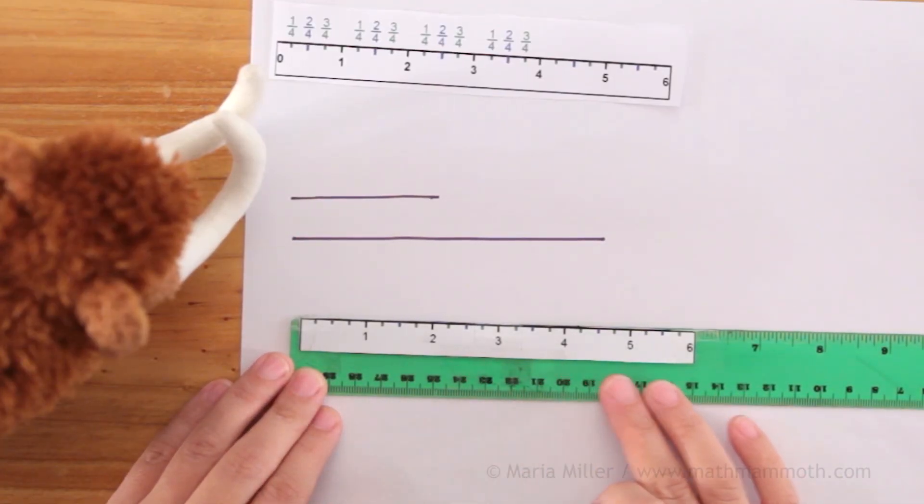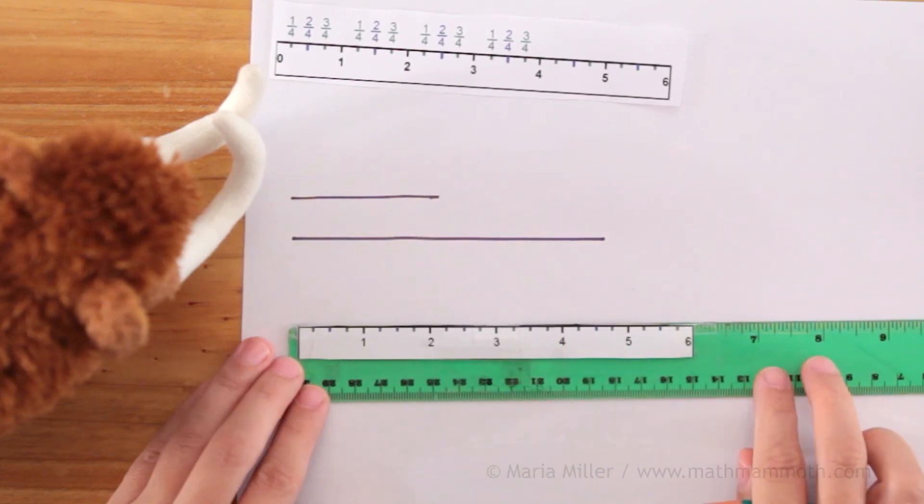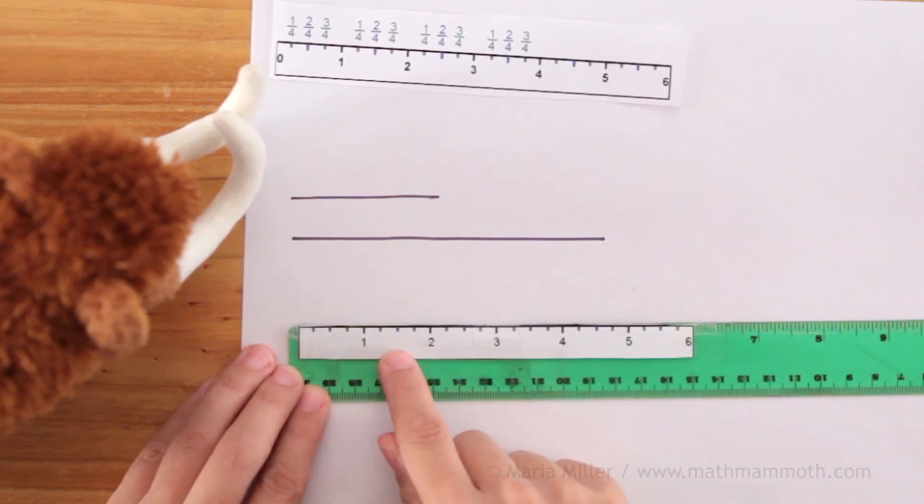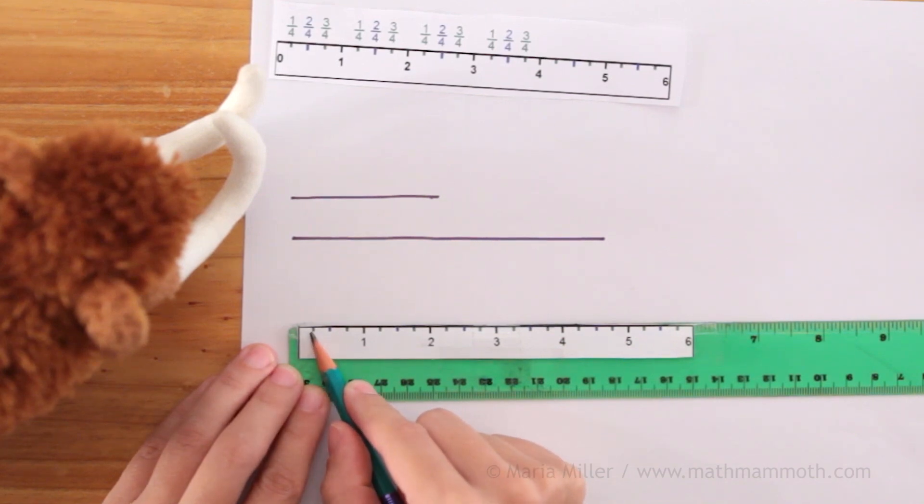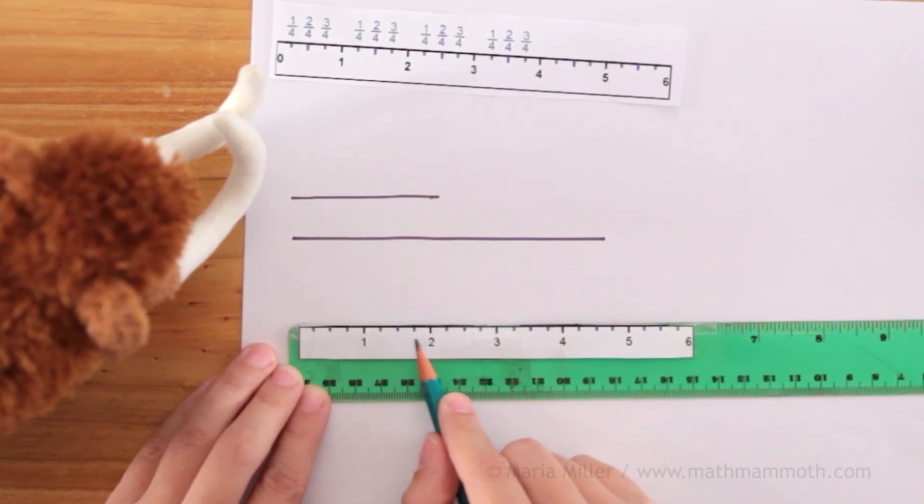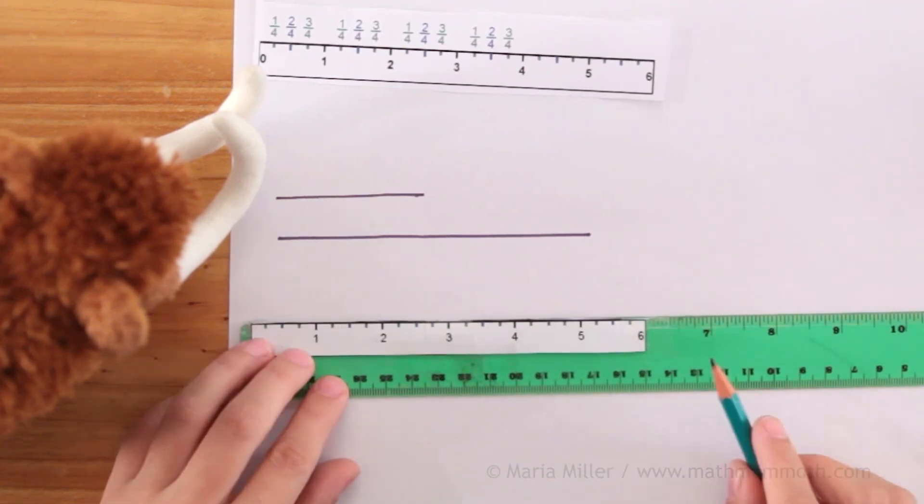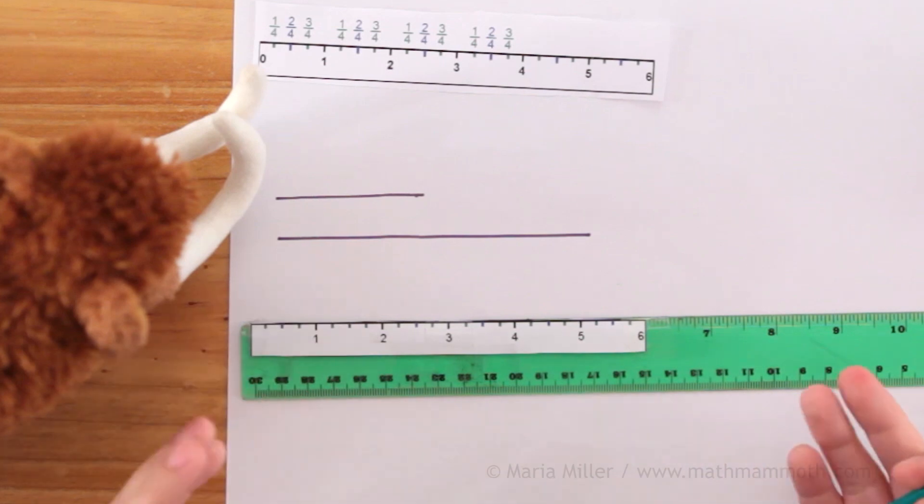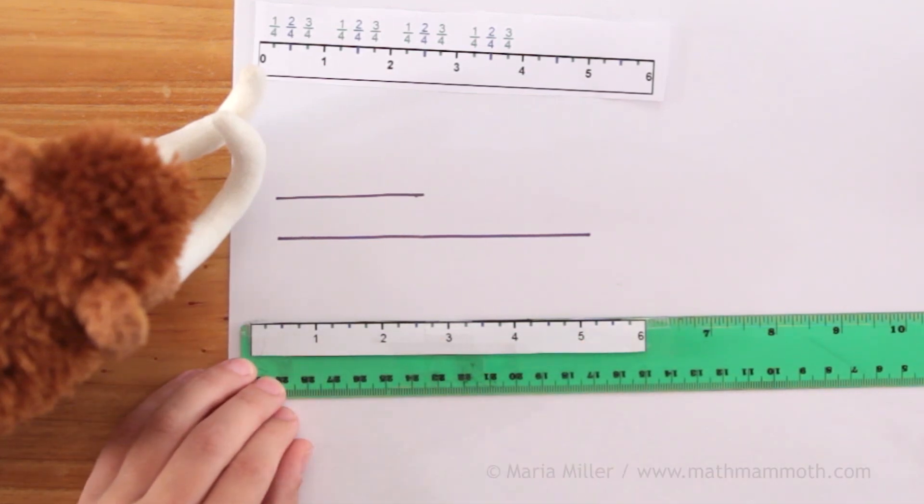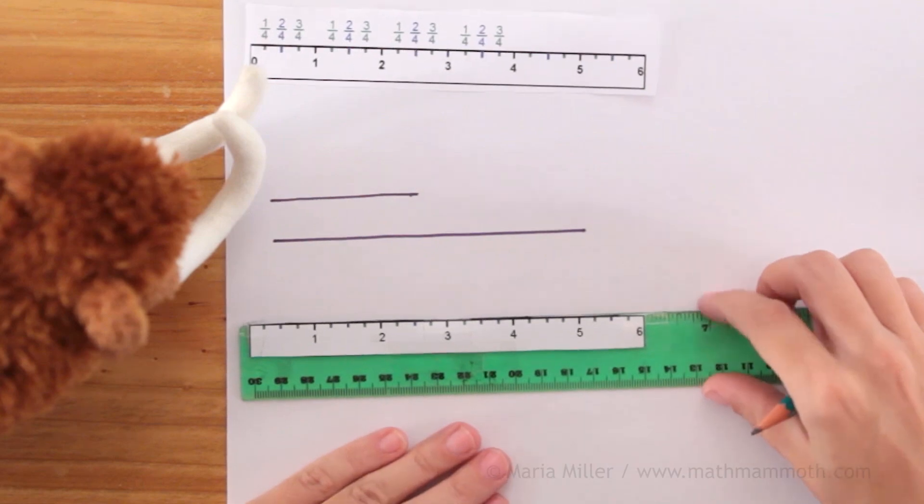I'm gonna use this special ruler now to measure these lines. And notice I taped here a paper that has just those one-fourths and one-half and three-fourths of an inch marks here between each whole inch. In reality this ruler has many more little lines here but it can be confusing for children and students. So we're gonna just use this for starters.